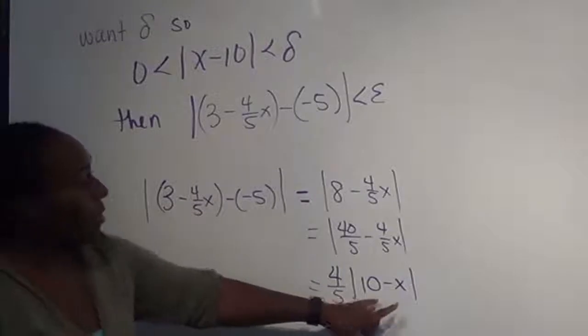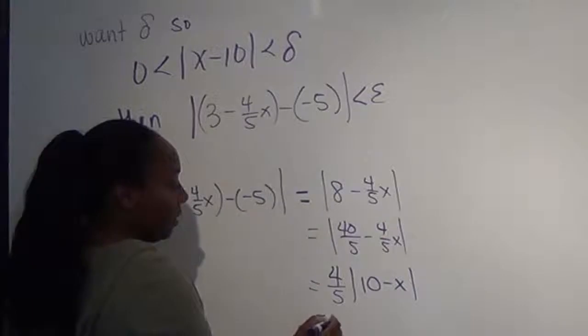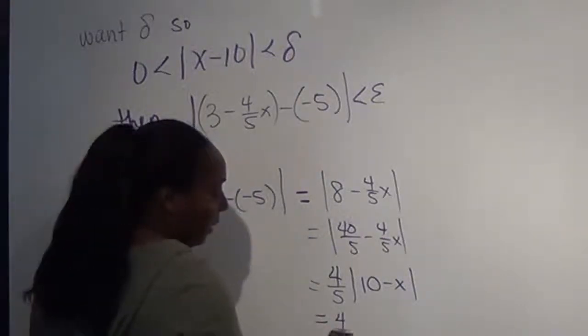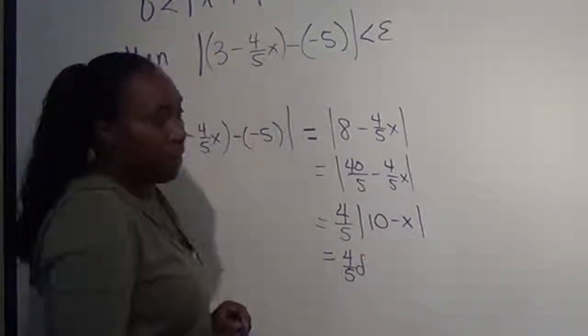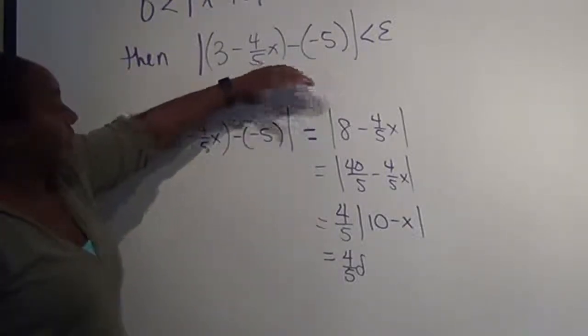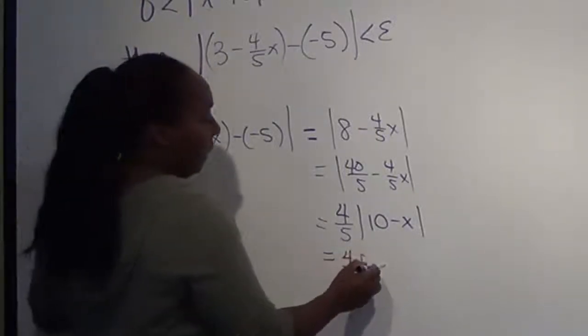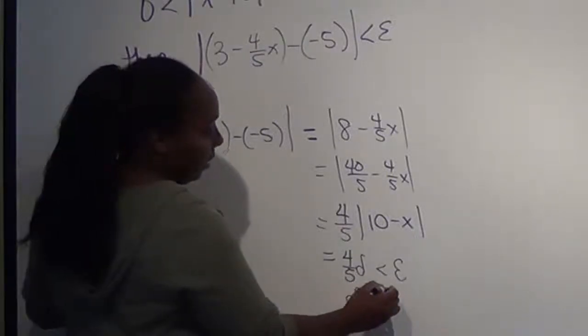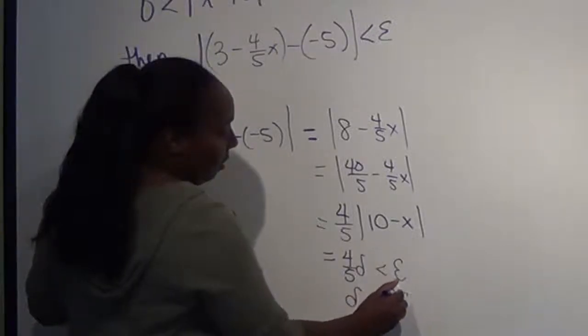But notice, 10 minus x, we want to be less than delta. So in this case, let's assume at its biggest, it is delta. But if we remember what we said here, this expression, which we've just brought down to here, has to be less than epsilon, which means we want delta to be less than 5/4 epsilon.